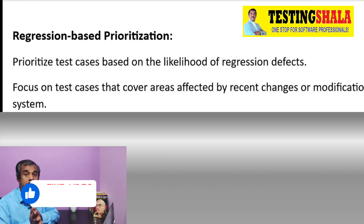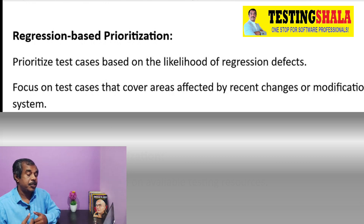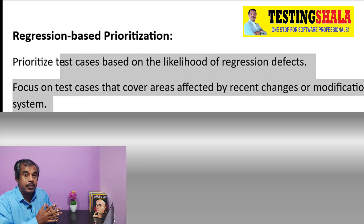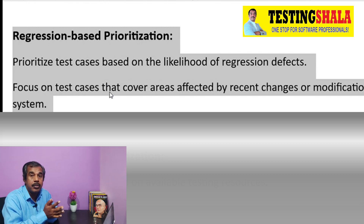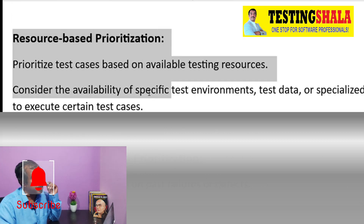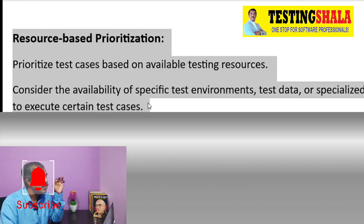The next type is regression-based prioritization. Here we choose test cases based on what kind of changes have been made to the application or product, so we can select only those test cases that are impacted by regression fixes. That is when we apply regression-based prioritization.